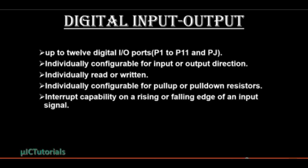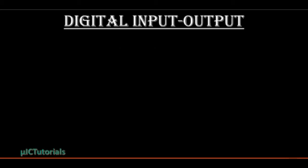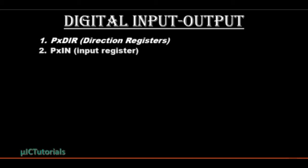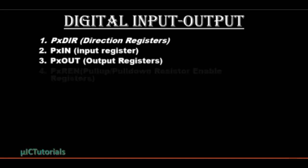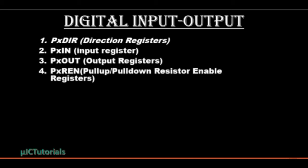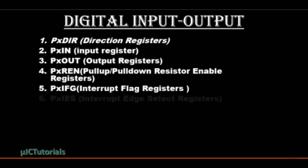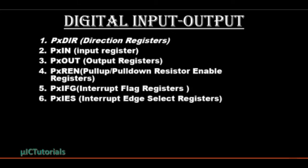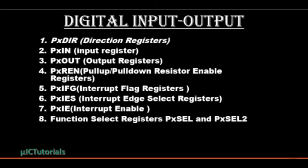There are 8 important registers for digital input-output operation. These are: direction registers, input register, output registers, pull-up/pull-down resistor enable registers, interrupt flag registers, interrupt edge select registers, interrupt enable, and function select registers.